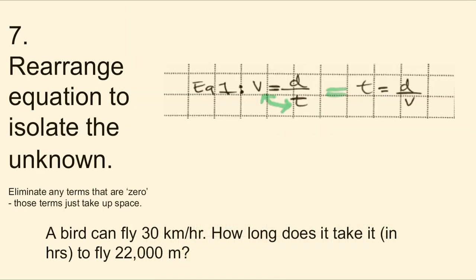Step seven, rearrange the equation to isolate or separate your unknown variable. We are solving for t and the shortcut to solving for a variable in the bottom is to simply flip-flop with the variable that is currently isolated. So t and v swap places.